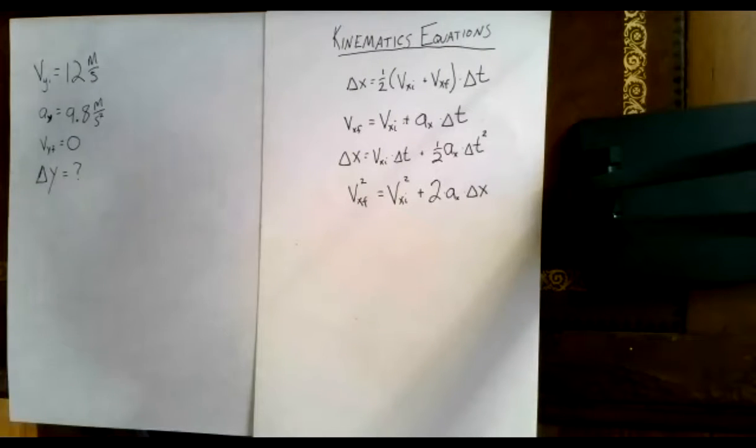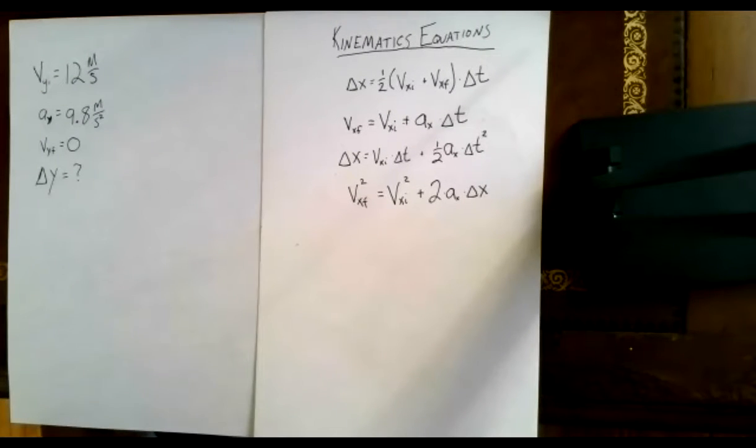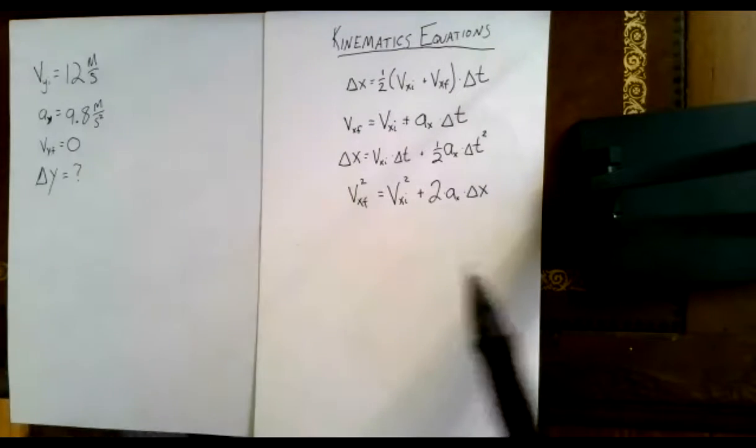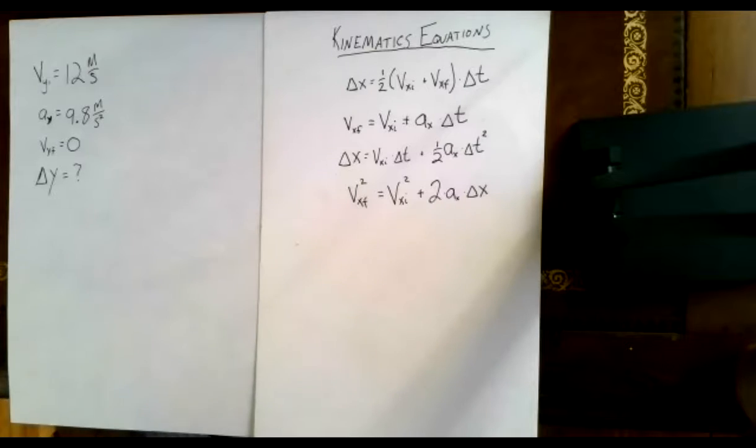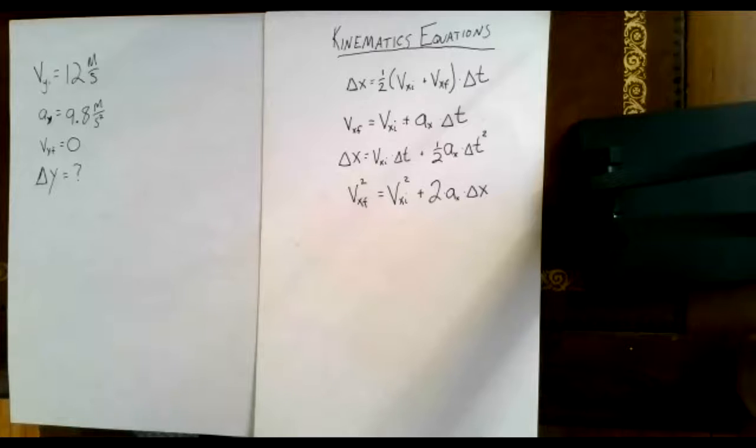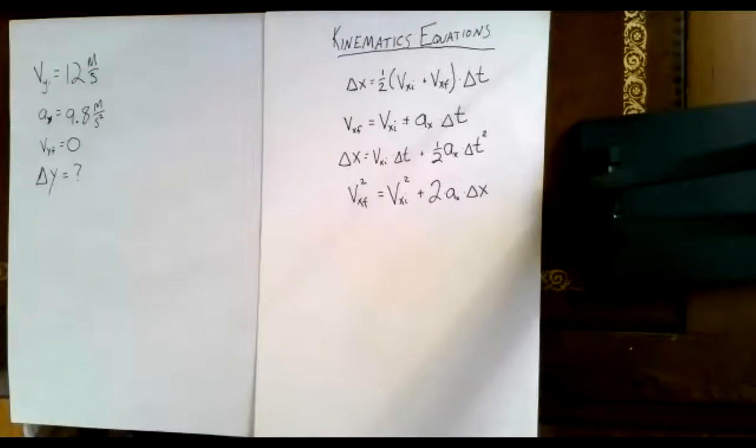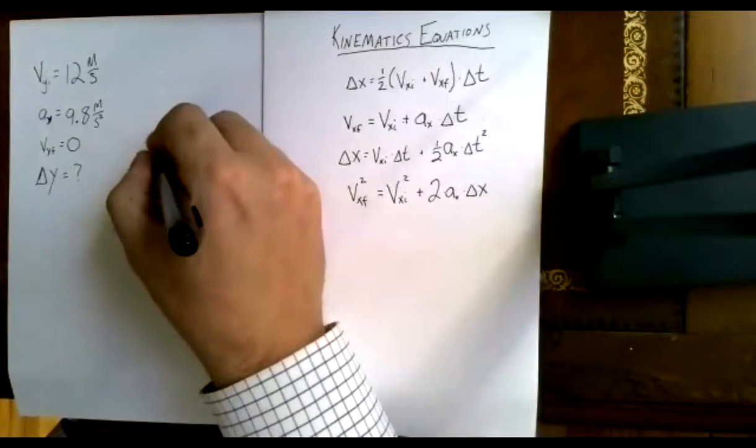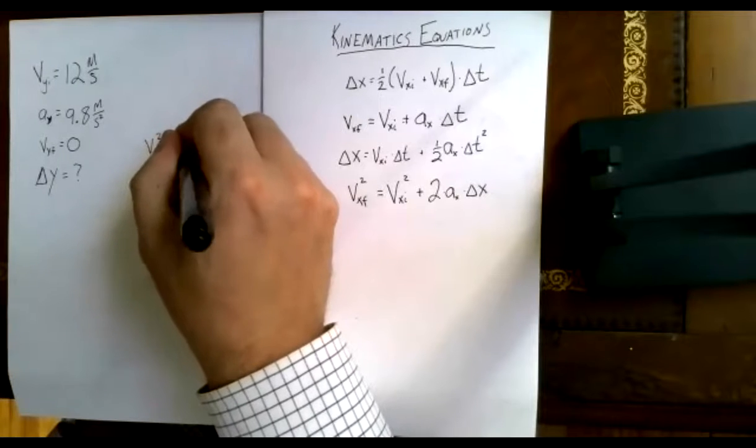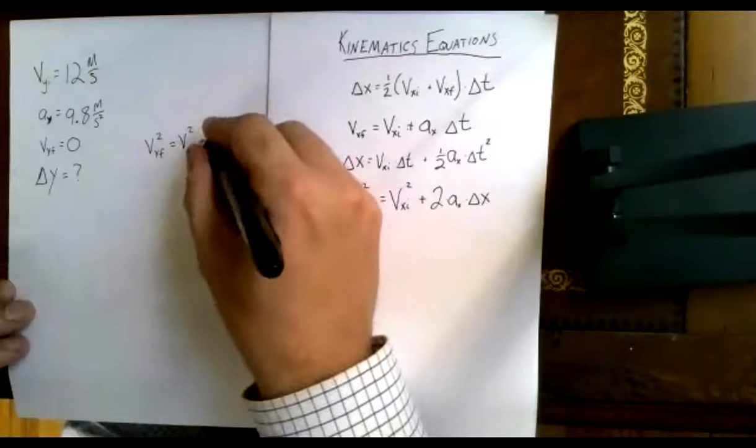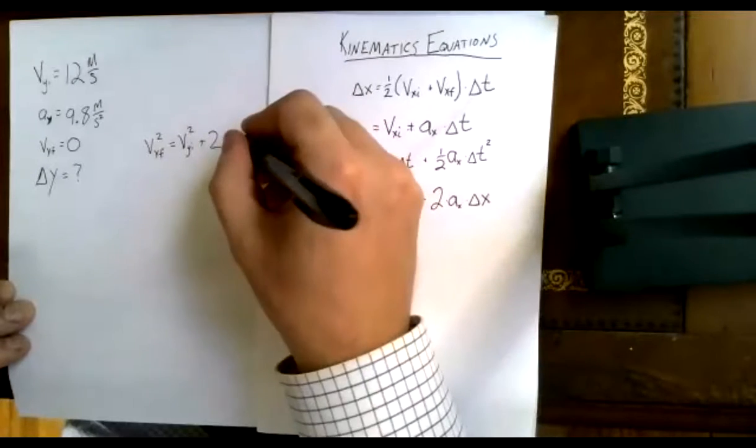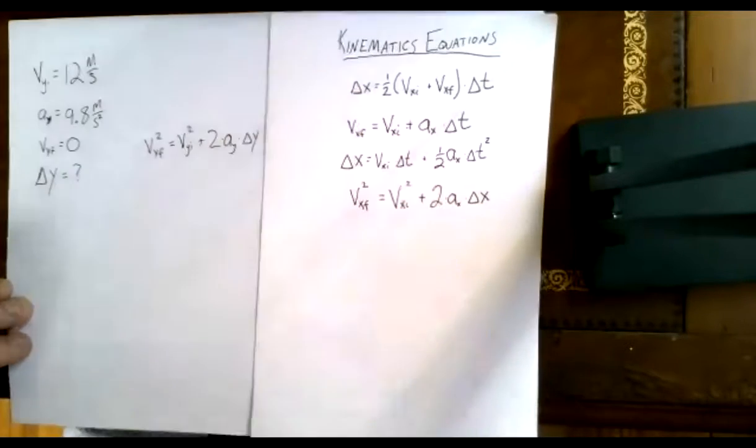We've got our three givens: the initial velocity, the final velocity, and the acceleration. And we're looking for the displacement. So which of the big four equations would we want to use to do that? We've got a vi, an a, a vf, and a delta. That last one? Yeah, it looks like the last one, right? Because only in the last one doesn't have a time. And we don't have time in any of our givens or unknowns.